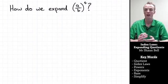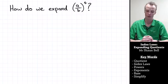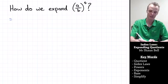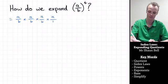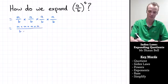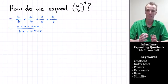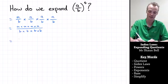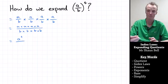What if we've got the quotient of a over b all to the power of 4? When we expand this, it's the same as saying a over b multiplied by itself 4 times. When we multiply fractions together, you multiply the numerators together, so it's going to be a times a times a times a, and the denominators together, so it's going to be b times b times b times b. So we've got a times itself 4 times, which is a to the fourth power, and b times itself 4 times, which is b to the fourth power.